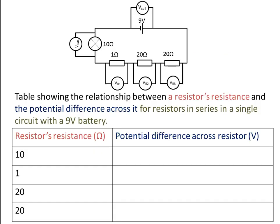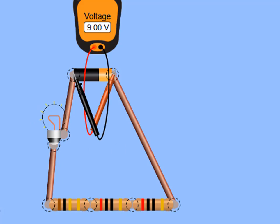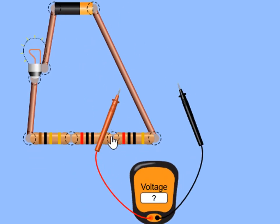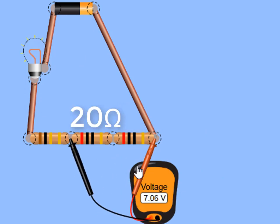We look at our circuit to decide what values go in the first column: a 10 ohm resistor (the bulb), a 1 ohm resistor, and two 20 ohm resistors. We go back to our simulation and take the measurements. First we check the voltmeter reading across the battery — indeed it is 9 volts. Across the first 20 ohm resistor: 3.53 volts. Across the second 20 ohm resistor: also 3.53 volts.